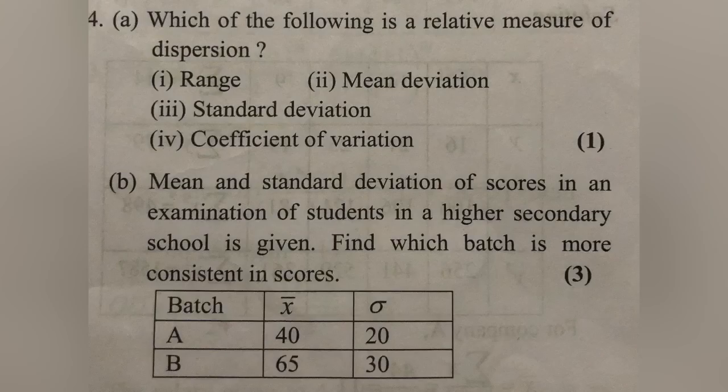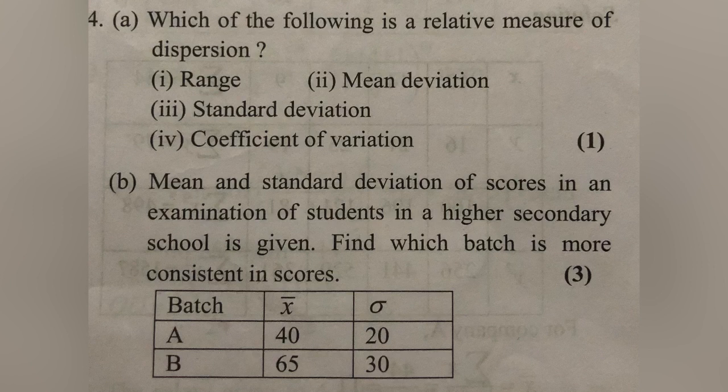Which of the following is a relative measure of dispersion? There are relative measures and absolute measures. With relative measures you have an exact comparative value. The coefficient of variation is a relative measure of dispersion. In other words, there are also absolute measures of dispersion.